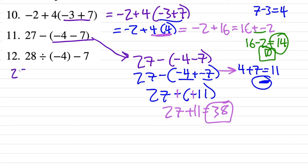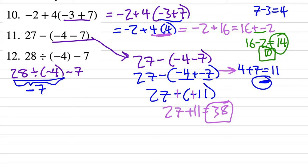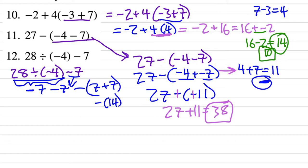Number 12: 28 divided by negative 4 minus 7. First, division: 28 divided by negative 4 — positive divided by negative gives a negative answer. 28 divided by 4 is 7, so that's negative 7. Then minus 7: starting from negative 7 and going 7 more negative gives negative 14. The answer for number 12 is negative 14.